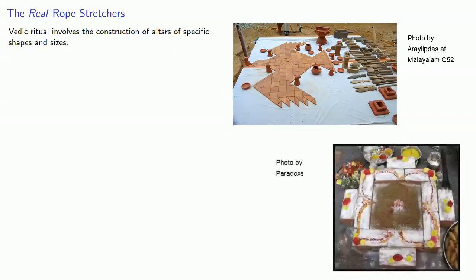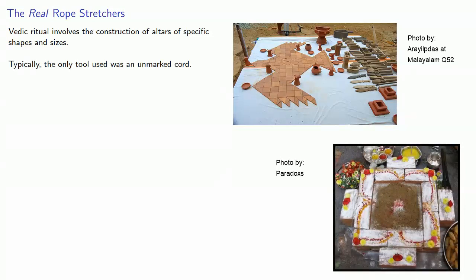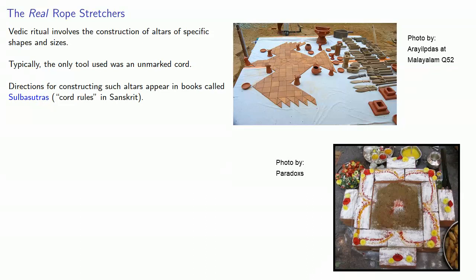Vedic ritual involves the construction of altars of specific shapes and sizes. Typically, the only tool used was an unmarked chord. Directions for constructing such altars appear in books called Sulbasutras, The Chord Rules in Sanskrit.